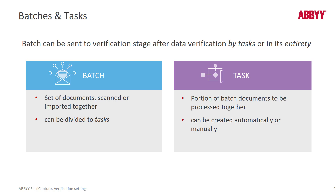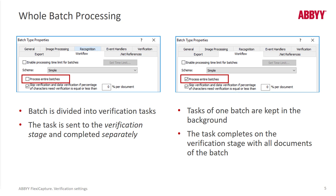You can also manually create tasks or set the task threshold. By default, there's a setting called Process Entire Batches that is checked. What this means is a batch needs to be processed in entirety — if there are four images in the batch, all four must be verified before they are exported.